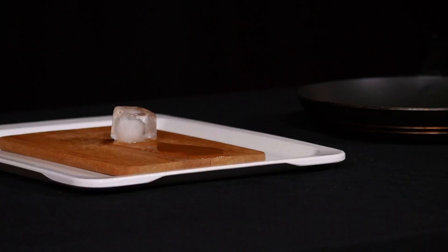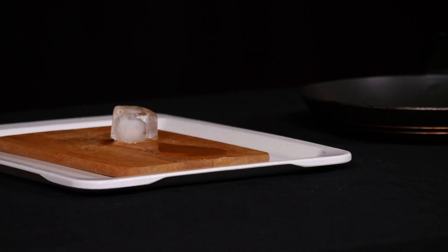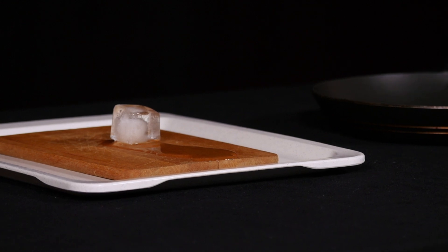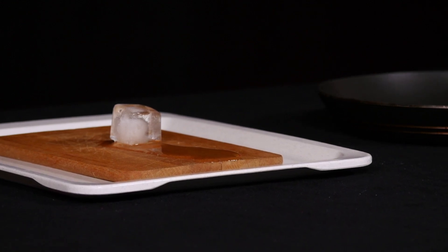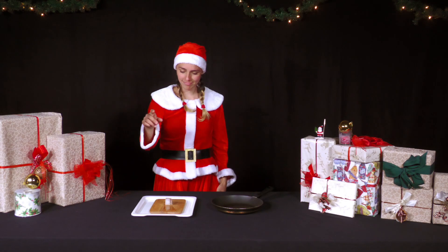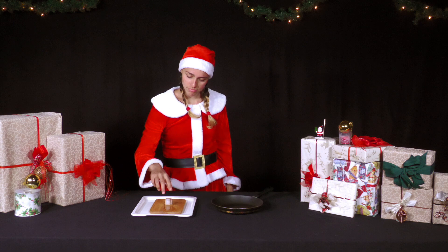The wooden board transports the heat only slowly; it has more of an insulating effect. As a result, the ice cube cools the wood of the board locally, but hardly any heat energy is transported from the wooden board into the ice cube. This means that the ice cube melts only very slowly.